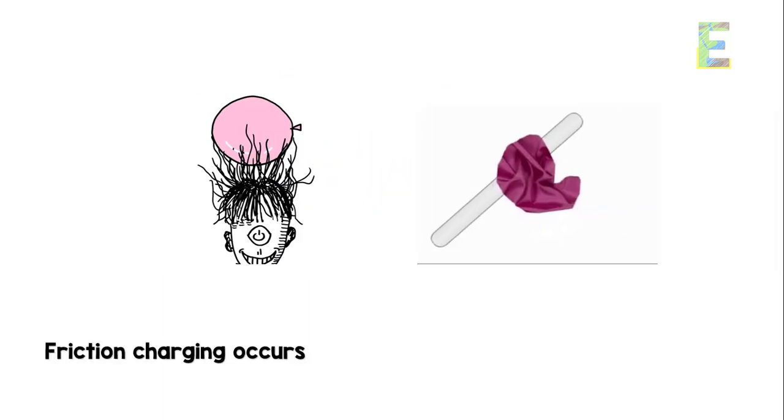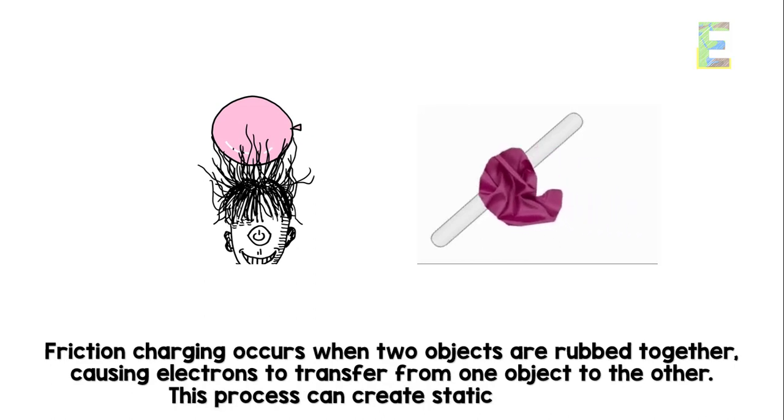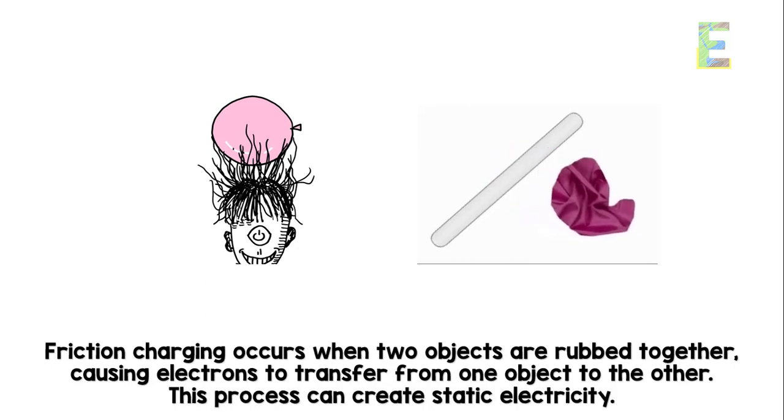Friction charging occurs when two objects are rubbed together, causing electrons to transfer from one object to the other. This process can create static electricity.